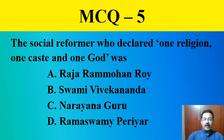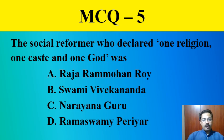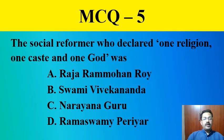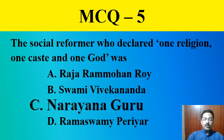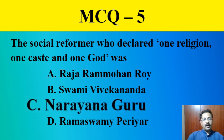MCQ question number five: The social reformer who declared 'one religion, one caste, and one God' — the correct answer is Narayana Guru.